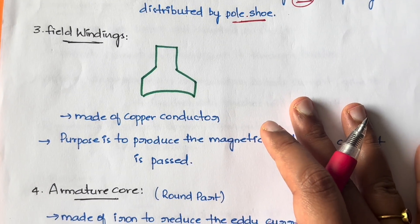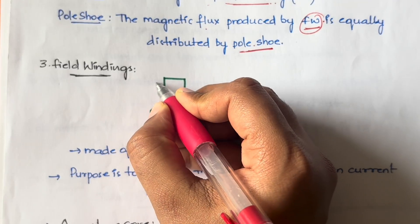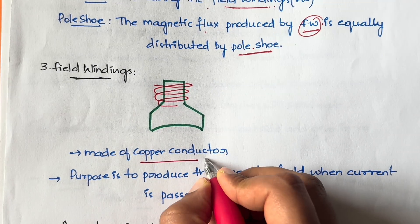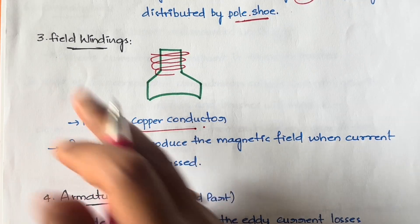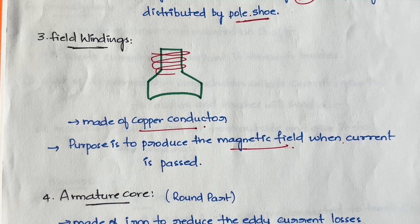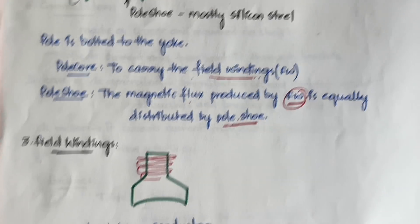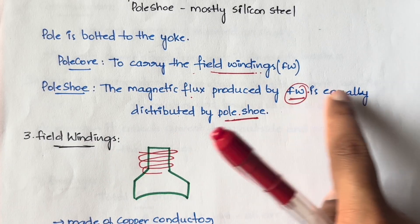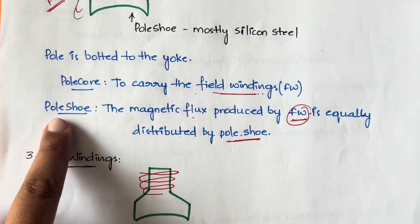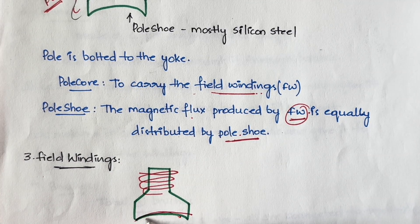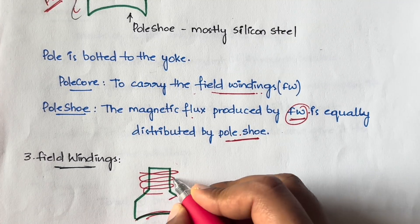Field windings are copper wires wound around the poles. Around these poles you will have copper wires wound around them — these are called field windings. They are usually made up of copper conductors. The purpose of field windings is to produce the magnetic field when current is passed through them. Whatever magnetic field is produced by the field windings will be equally distributed to the other parts of the machine by the pole shoe.